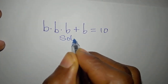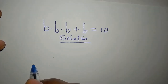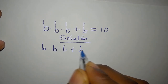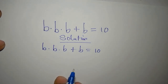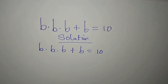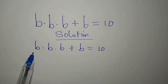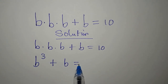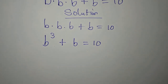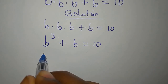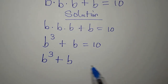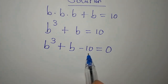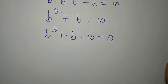Let's provide the complete solution to this problem: B times B times B plus B equals 10. B times B times B gives us B to the power of 3, so we have B to the power of 3 plus B equals 10. Taking 10 to the left, we get B to the power of 3 plus B minus 10 equals 0.